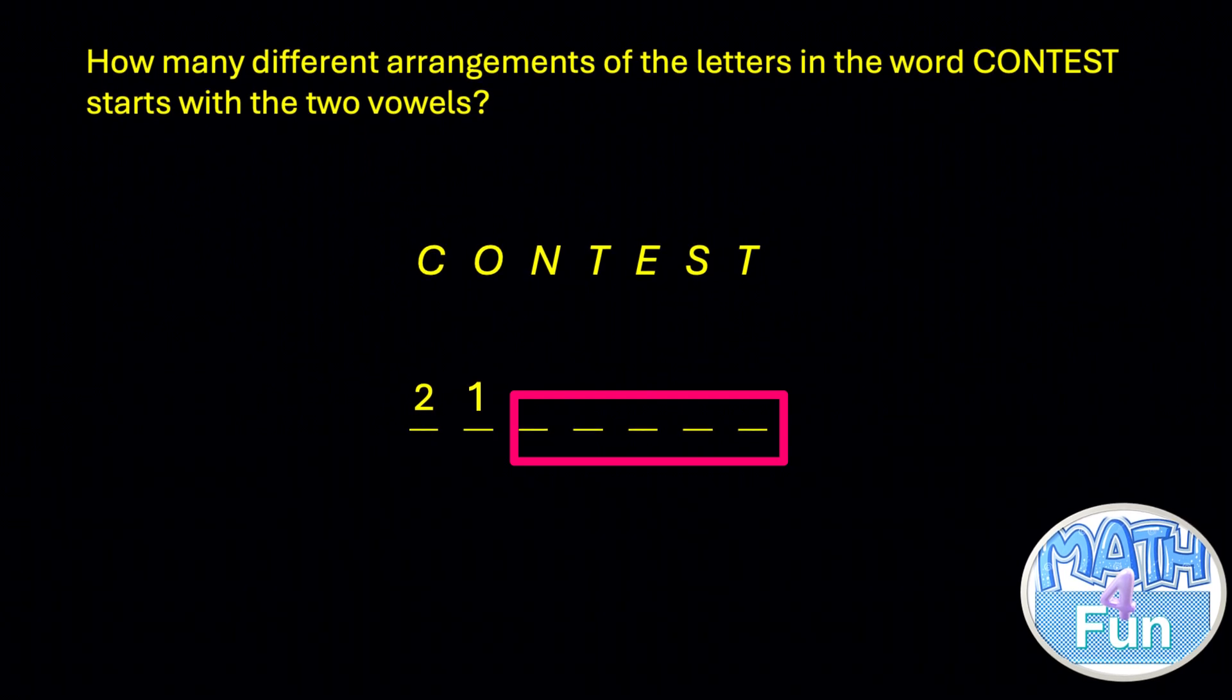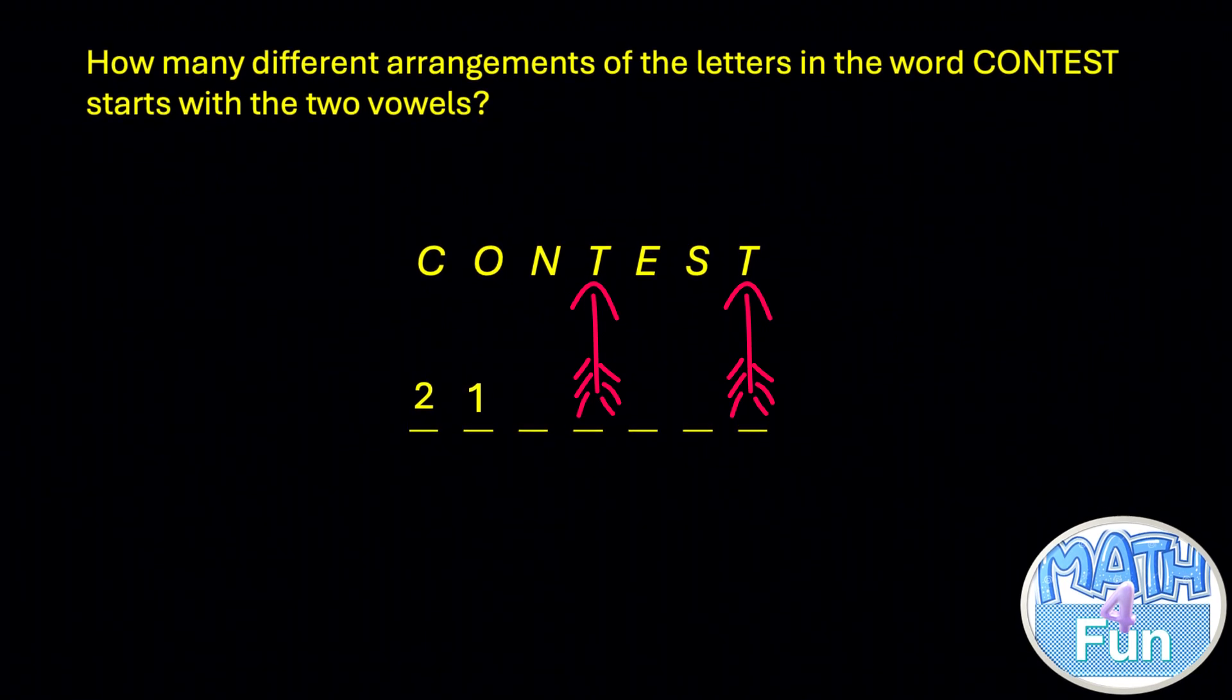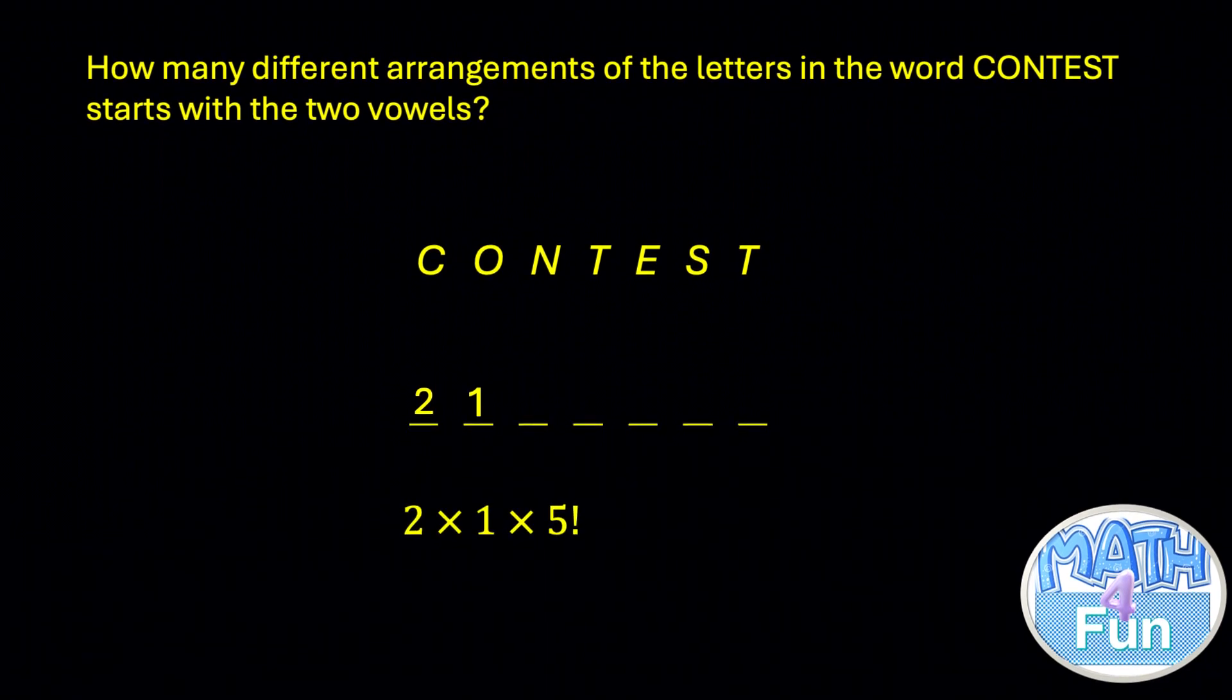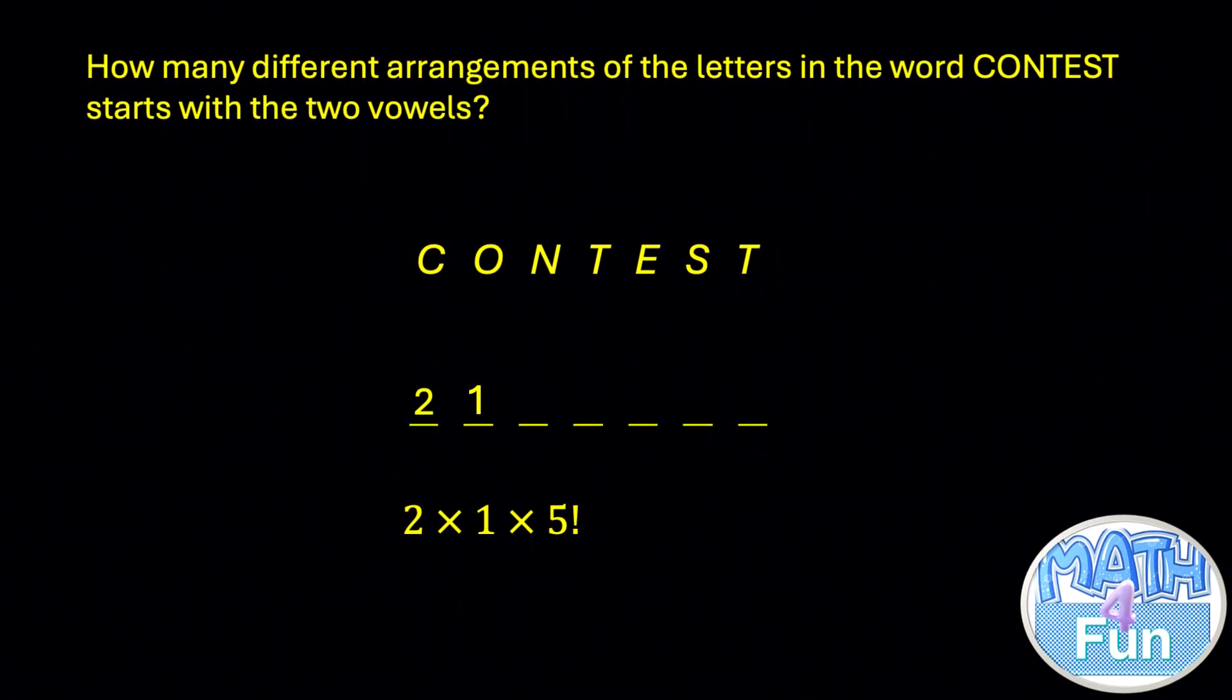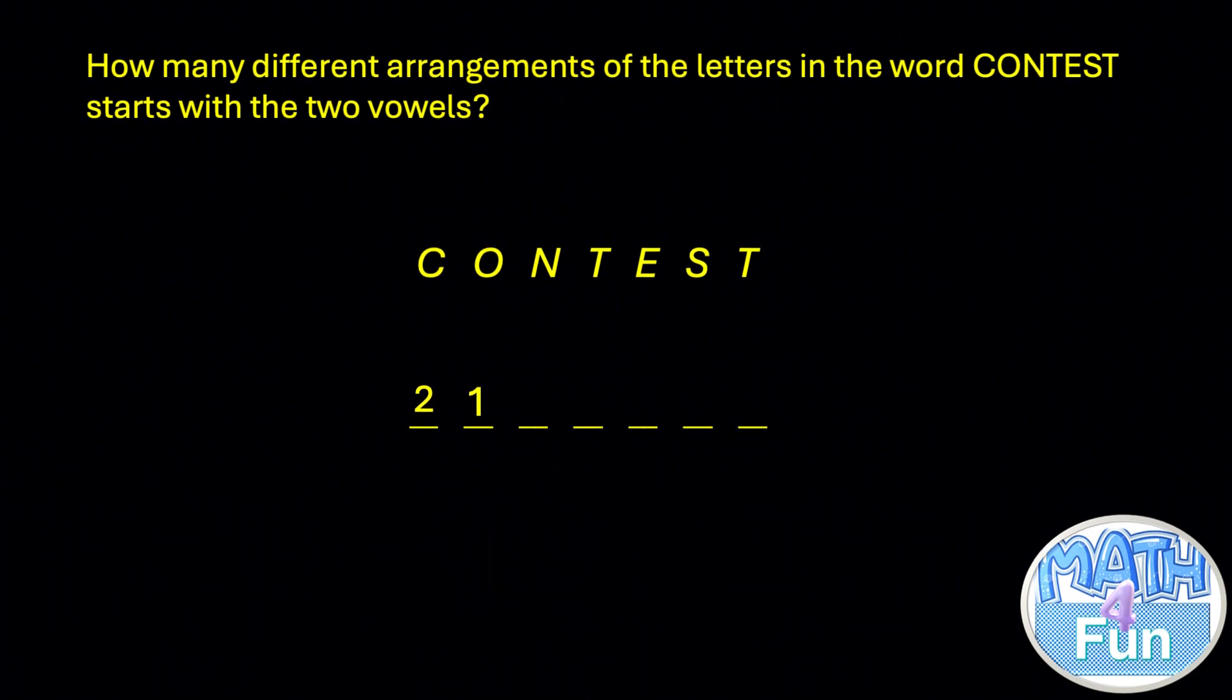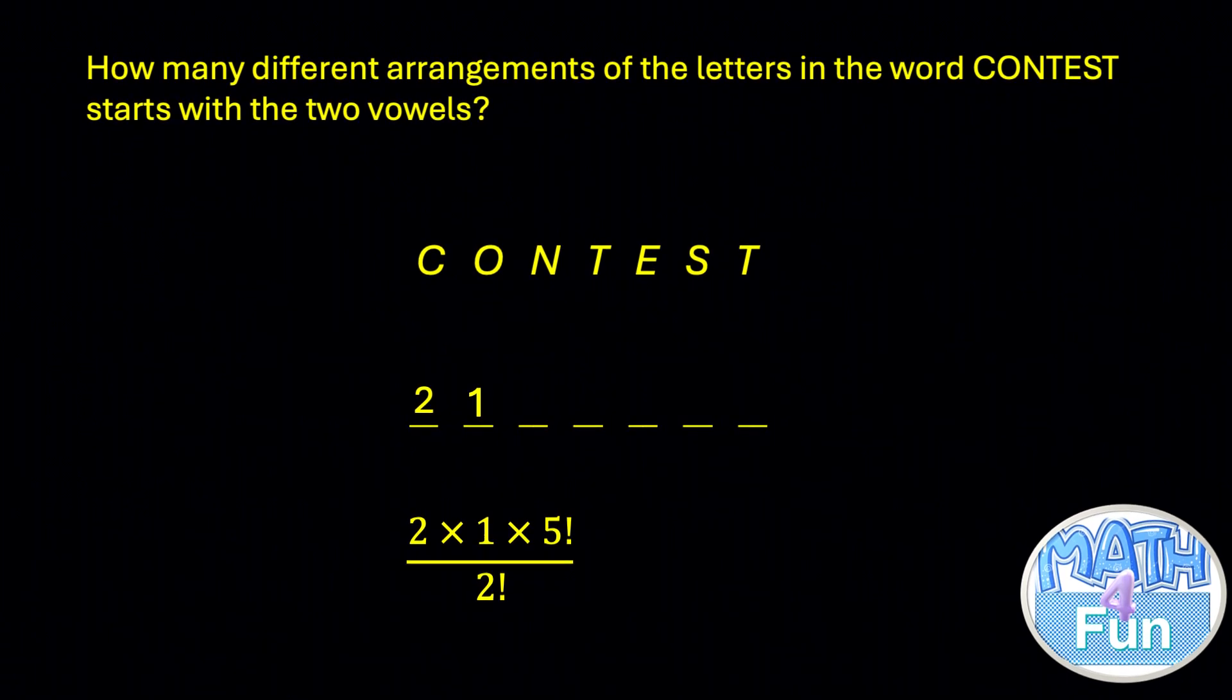So look at that. If T is not repeated, the total number of arrangements starting with the two vowels is 2 times 1 times 5 factorial. But since one letter is repeated twice, we have to divide by 2 factorial. So the answer is going to be 2 times 1 times 5 factorial divided by 2 factorial.